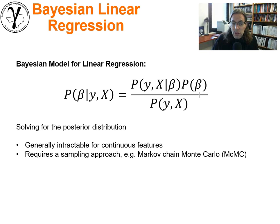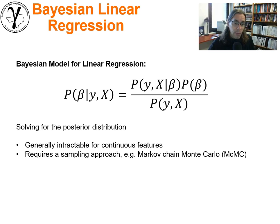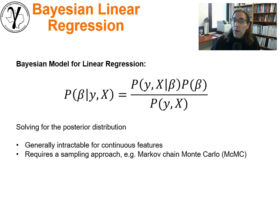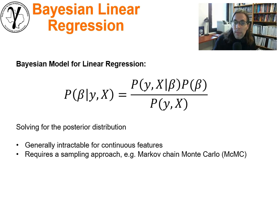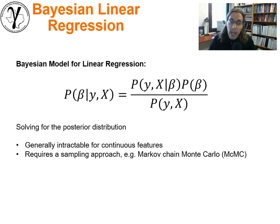How do we solve for the posterior distribution? We need to know the probability of specific parameters for a model given the observations in training and the prior information. Generally, this is often intractable for continuous features to solve directly, and it'll require a sampling approach like Markov chain Monte Carlo. I'm going to end right there and record a separate short video giving a very basic introduction to Markov chain Monte Carlo methods to sample and get at this posterior. I'll also have another video showing a solution based on Python code using some great packages to get the job done.